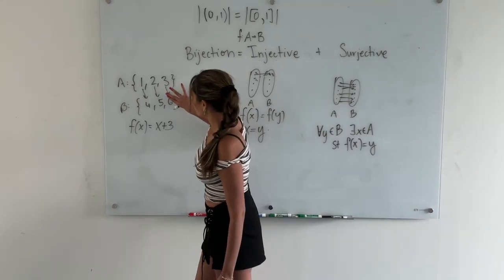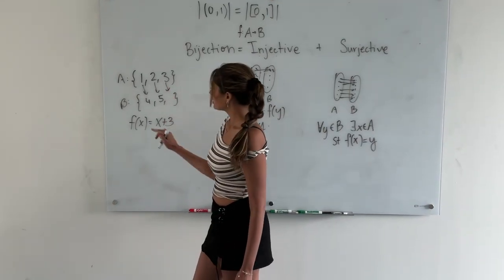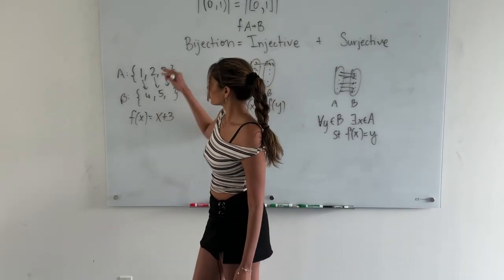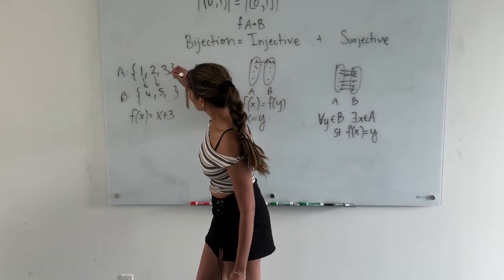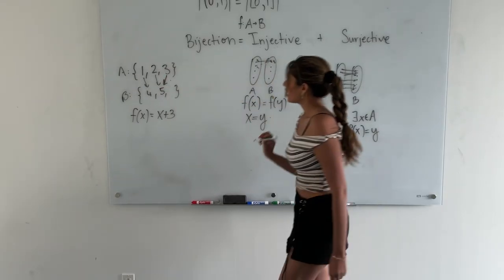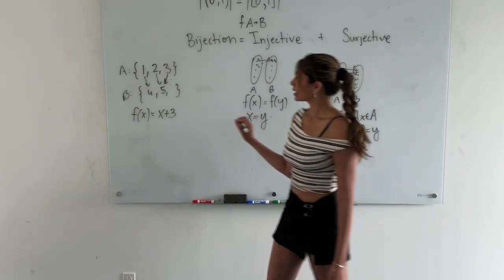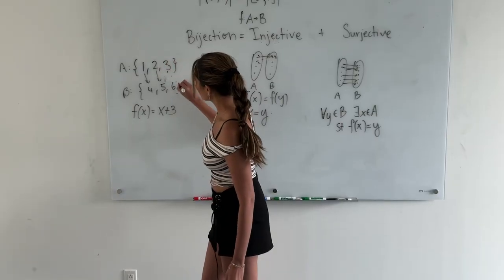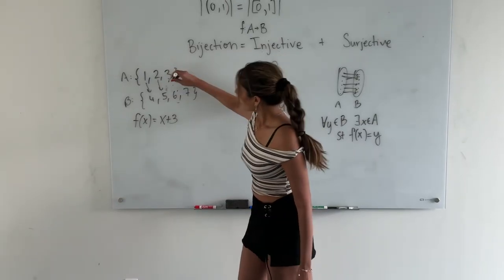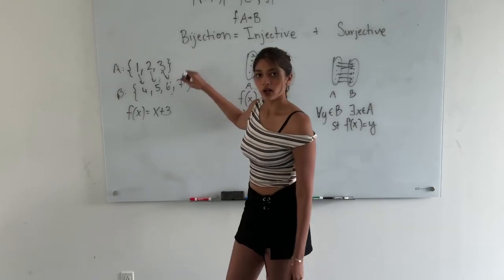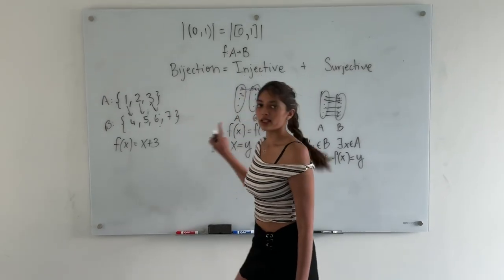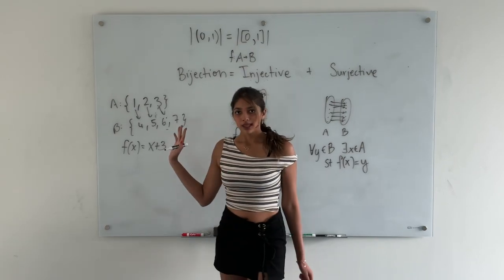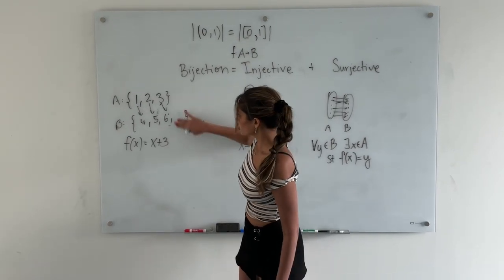However, if I get rid of 6 here, then one element in B would have two arrows pointing to it, which violates injectivity. And if I had {4, 5, 6, 7} in B, then 7 would not have anything mapping to it, which violates surjectivity. So this would not be a bijection, but the original mapping is. If some function is a bijection, then those two sets have the same size.